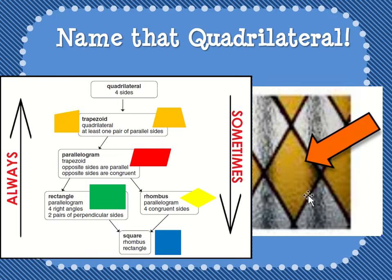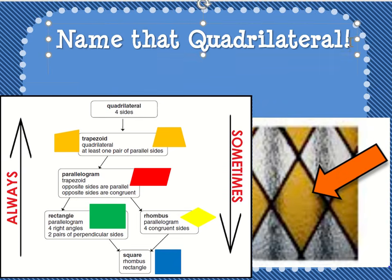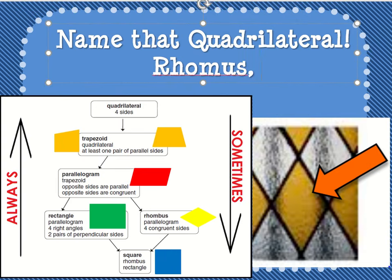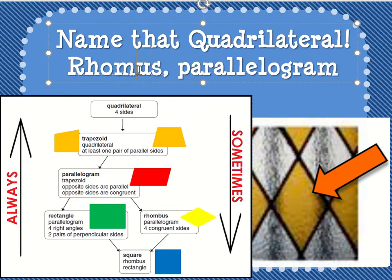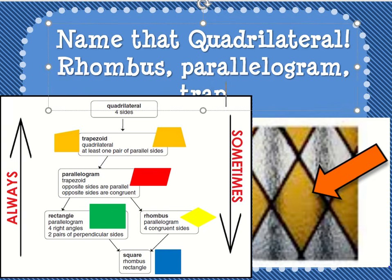Last but not least, we have this shape right here — name that quadrilateral. Hopefully you said all four sides are equal, so that is a rhombus. But it's not just a rhombus — we're going to look above it; it's everything above it too. It's a parallelogram, a trapezoid, and a quadrilateral.